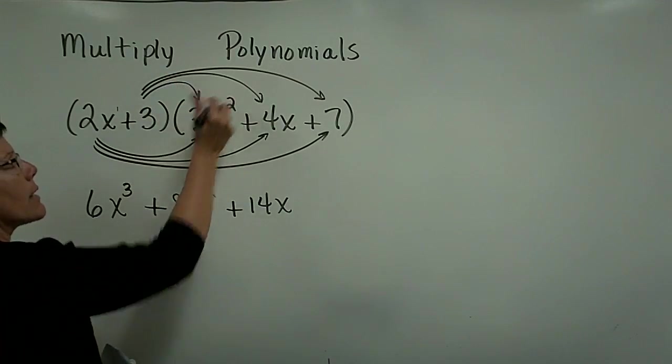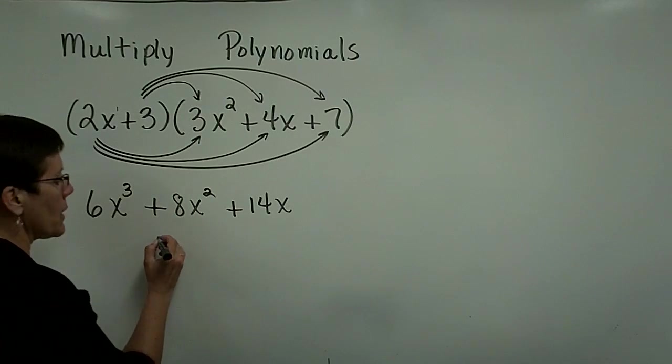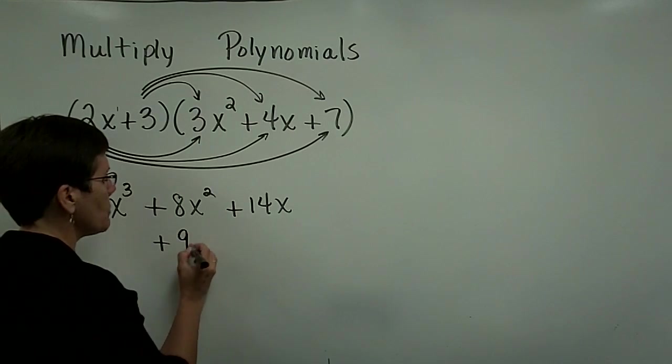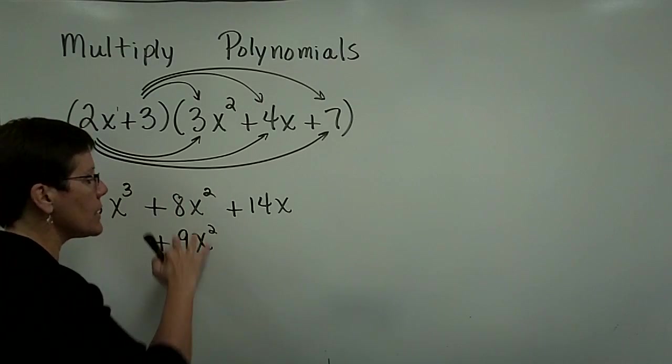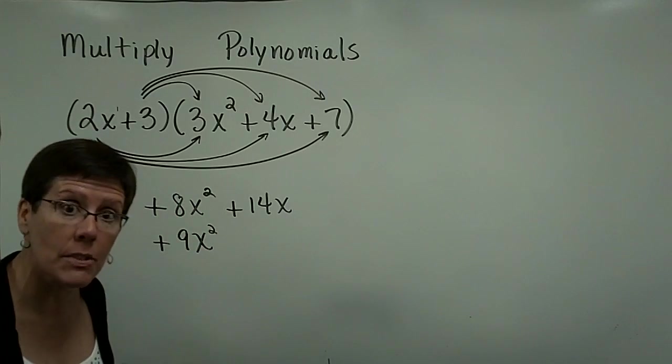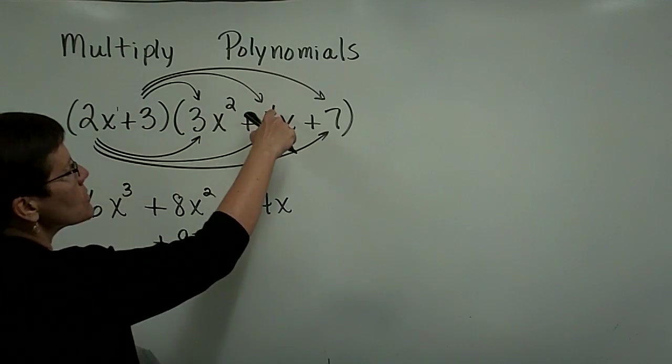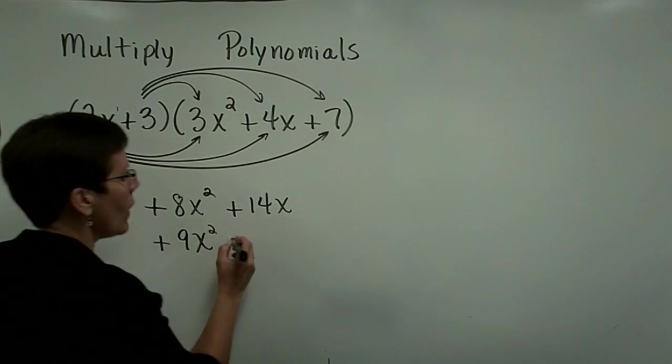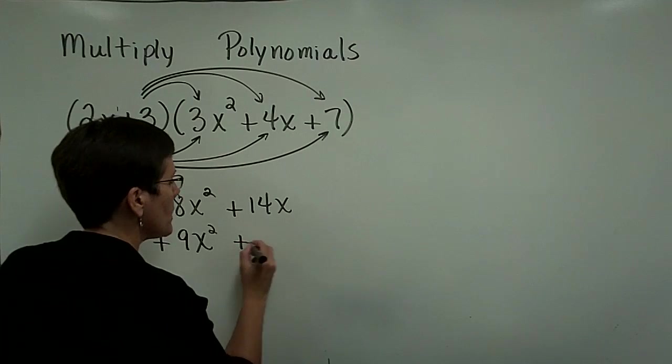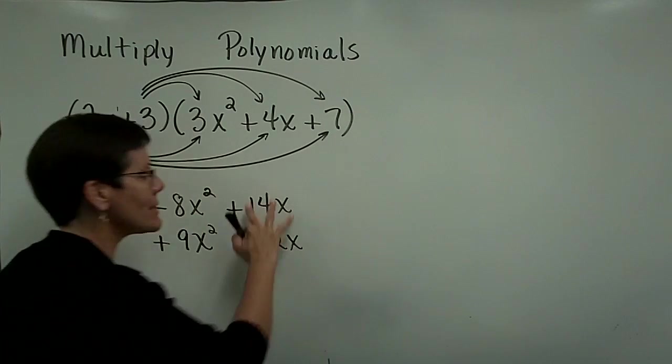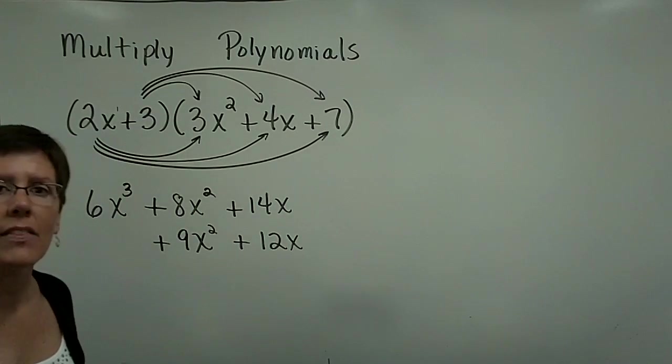So 3 times 3x squared is 9x squared. I personally like to put that right underneath the 8x squared, because they're like terms and I'm going to have to combine them in a minute. Then the 3 times the 4x is 12x. I like to put it under the 14x, because they're like terms and I have to add them in a minute.